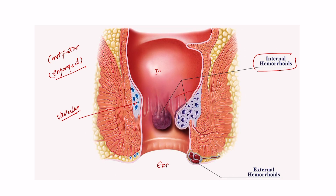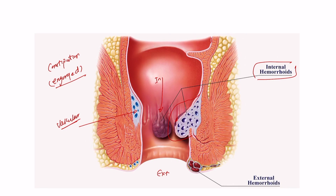If we have a large cushion in this area — an internal haemorrhoid — and the patient is passing hard faeces, it will cause irritation and may lead to bleeding. That's why the commonest presentation of haemorrhoids is bleeding, specifically bleeding at the end of defecation. Patients usually notice it on the tissue, and it is typically fresh bleeding.